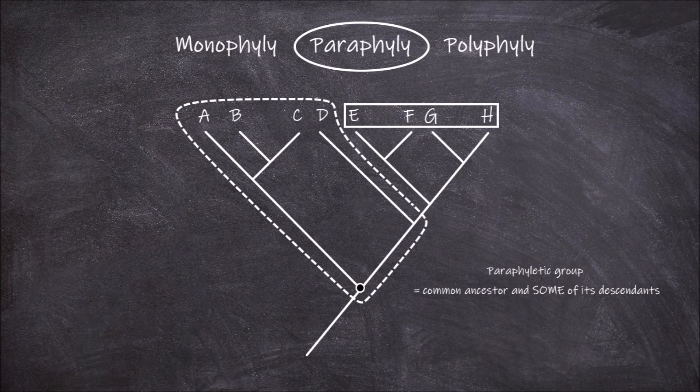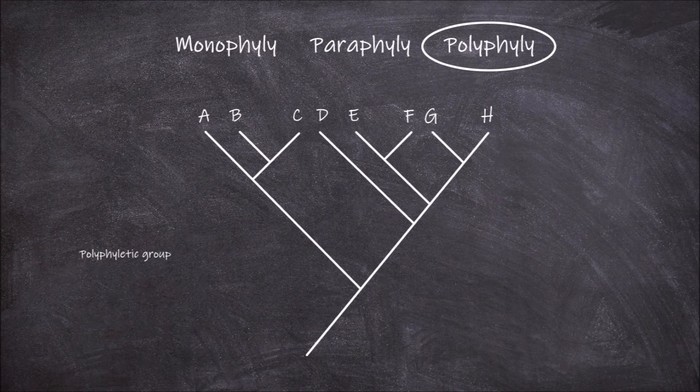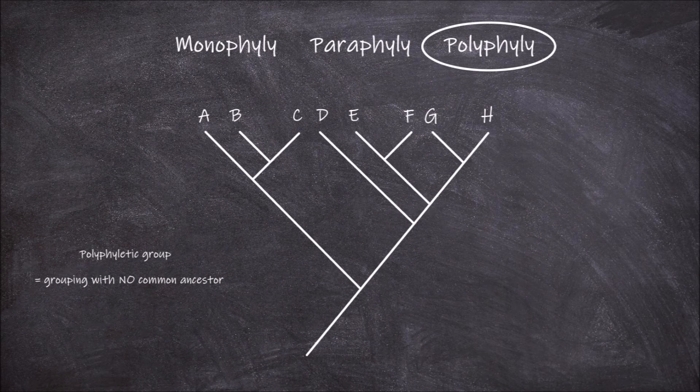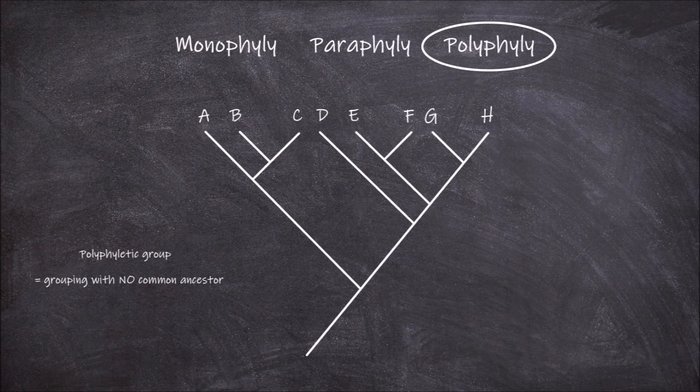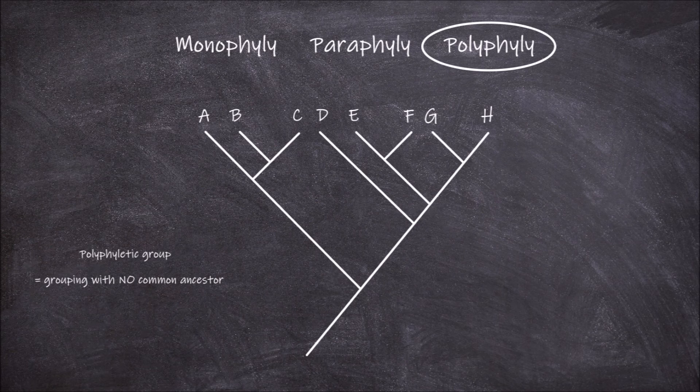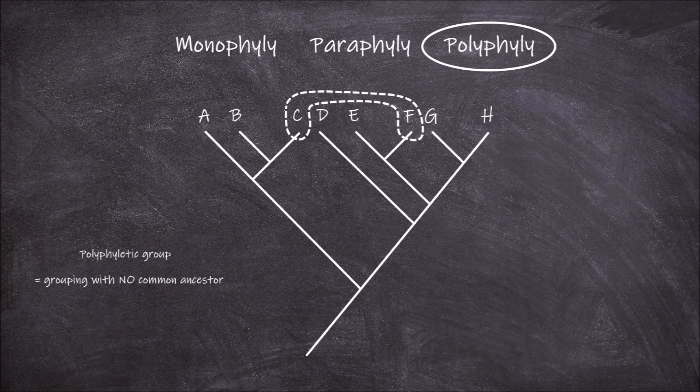The third type of phylogenetic relationship we're going to go over is polyphyly. Polyphyly refers to a grouping of two or more unrelated species that do not have the same common ancestor. They are often grouped for other reasons than evolutionary origin such as by having similar or shared physical features. If we look at our theoretical phylogenetic tree an example of a polyphyletic group could be taxa C and F.